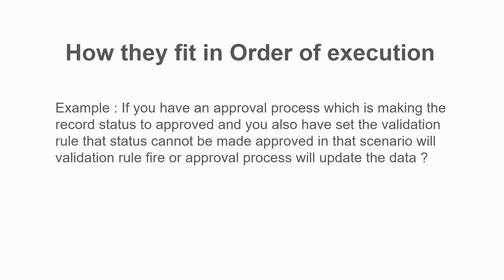For this type of question you must understand the order of execution. If you understand the topics very well, you can easily answer. There is one more very famous question: if a field is getting updated by a flow, by a trigger, by a process builder, and by a workflow rule — what will be the final value of that field? Again, you need to understand the order of execution to answer this. So the key point is: understand how the order of execution works across all automation tools, including triggers.